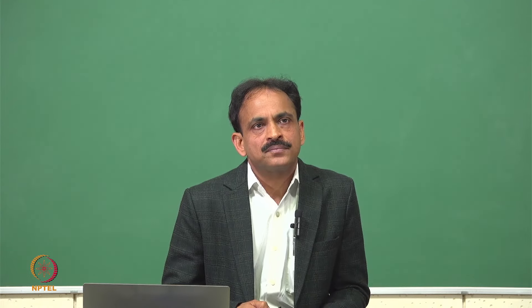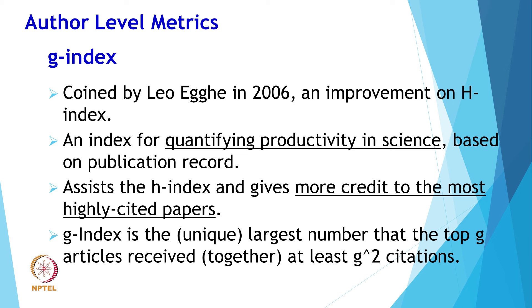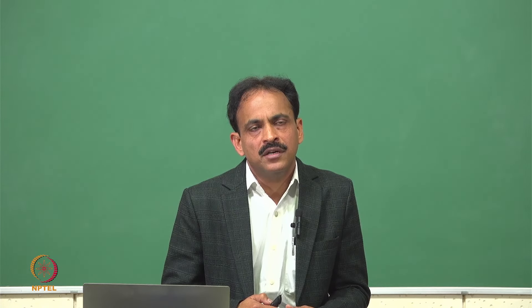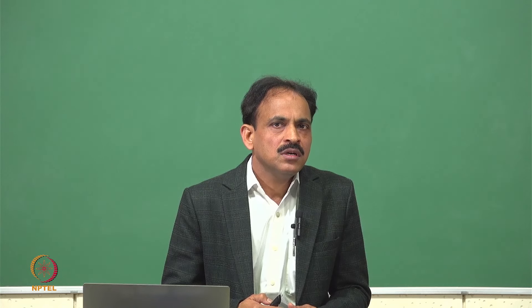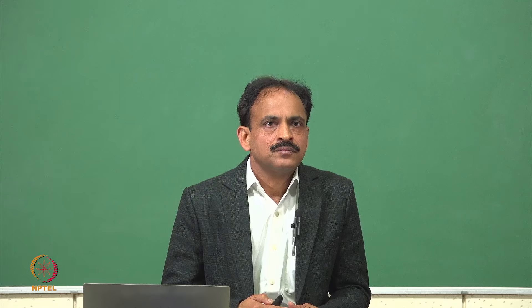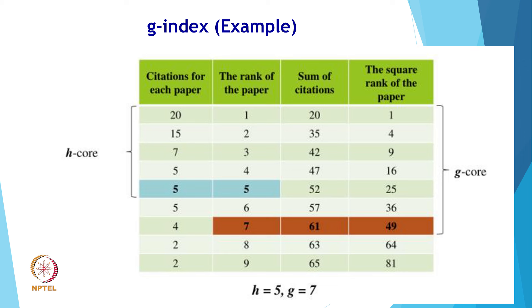G index is another author-level metric coined by Leo Egghe in 2006 as an improvement of H index. It is an index quantifying productivity in science based on publication record. G index assists the H index and gives more credit to the most highly cited papers. G index is the unique largest number such that the top G articles receive together at least G² citations. G index is calculated by ranking a set of articles in decreasing order of citations. The limitation of G index is that it is not as widely accepted as H index. In the example shown, H index is 5 and G index is 7.